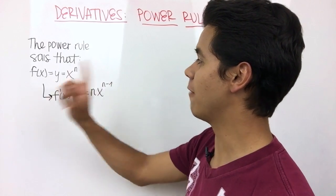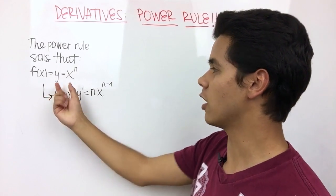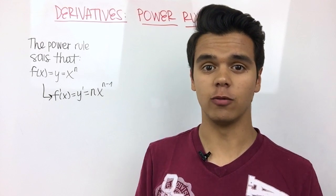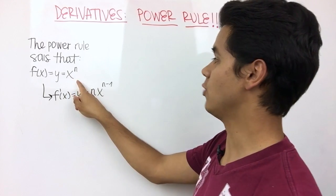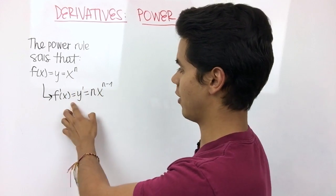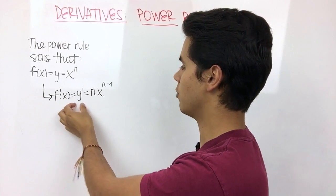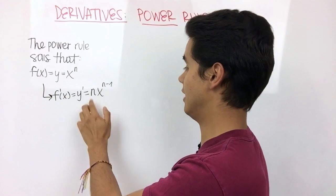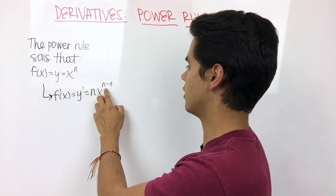Basically the power rule says that if you have a function of x, which is equal to y, or you can call it whatever letter you want, is equal to x to the power of n, its derivative, so f prime of x, which is equal to y prime, or your letter prime, is equal to n times x to the n minus 1.